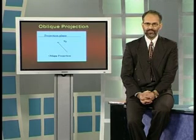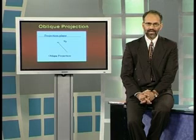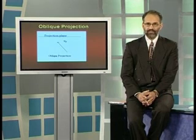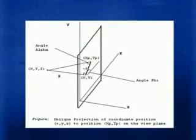As you are looking at this figure right now, if the angle of projection is other than 90 degrees, the projection, in spite of being parallel, would be termed as oblique projection. In this figure we have a scenario for finding out the positions of the projected points. If we have a 3D point x, y, z to project onto our plane, its orthographic projection would be in the form x, y.